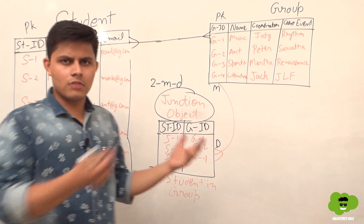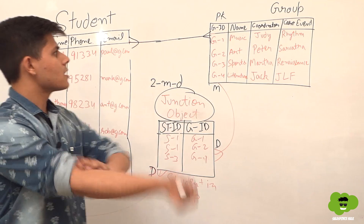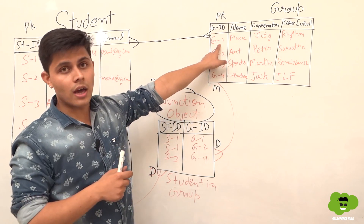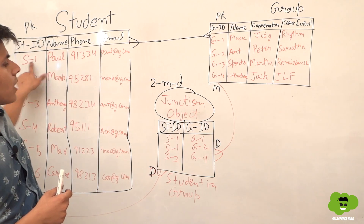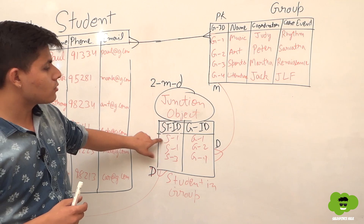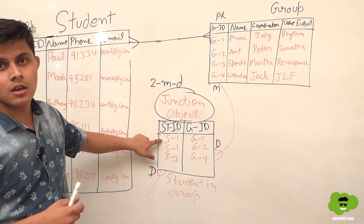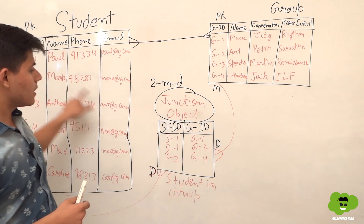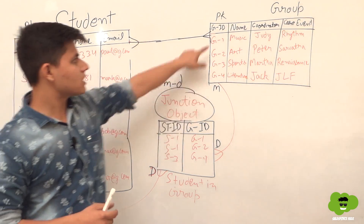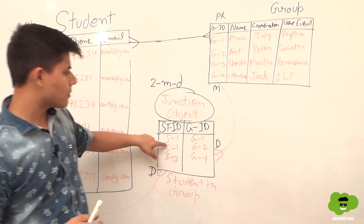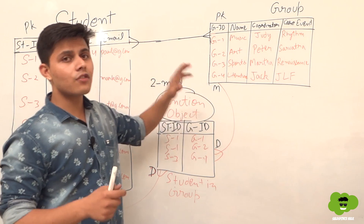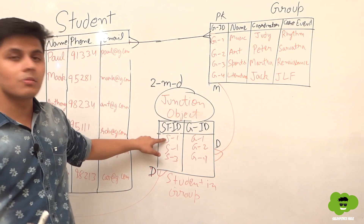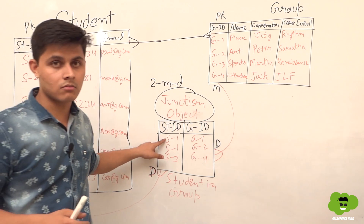Here's an example: if you can see G1 but cannot see S1, you won't be able to see the junction record. If you can see S1 but cannot see G1, you still won't be able to see the junction record. Only if you can see both S1 and G1 will you be able to see the junction object record.